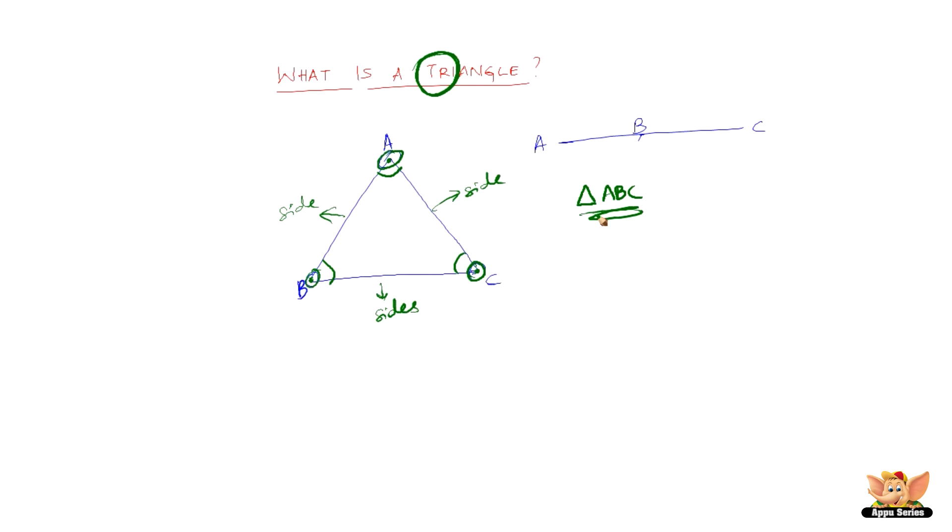Another thing is, the sum of the three angles in a triangle is always equal to 180 degrees. Angle A plus angle B plus angle C is always equal to 180 degrees.